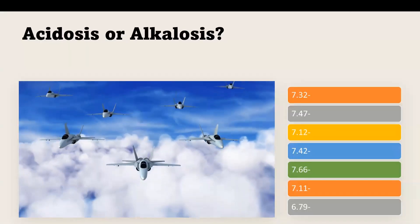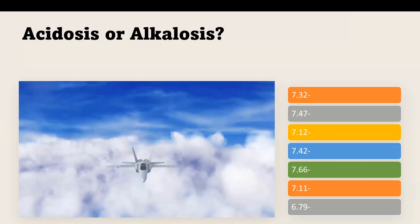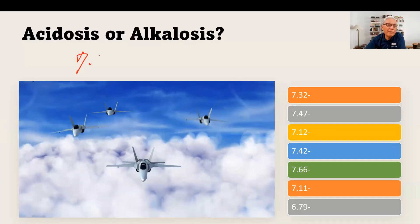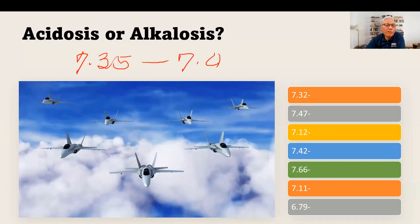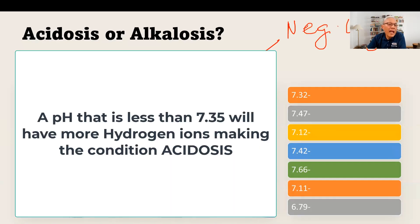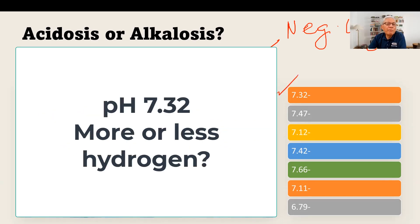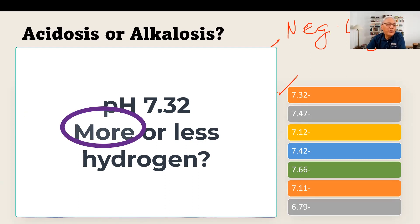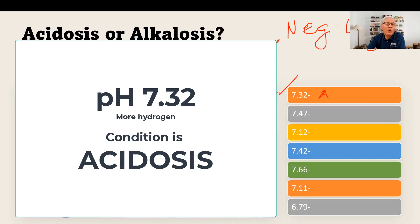Let's underscore the point. Normal pH is 7.35 to 7.45. Whenever you have a pH less than 7.35, do we have more hydrogen or less hydrogen? More. So what would 7.32 be? We have more hydrogen. When we have more hydrogen, what is the condition known as? Acidosis. So 7.32 is acidosis.